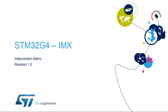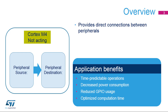Hello and welcome to this presentation of the STM32 interconnect matrix. It covers the main features of this matrix, which is widely used to connect various internal peripherals between each other. The interconnect matrix integrated inside STM32 products provides direct connections between peripherals. Applications benefit from these interconnections to ensure time-predictable operations, to decrease power consumption by avoiding complex management of peripheral communications through reading or writing registers using CPU instructions, and to reduce the need to loop the signal from a source to a destination through a dedicated GPIO.